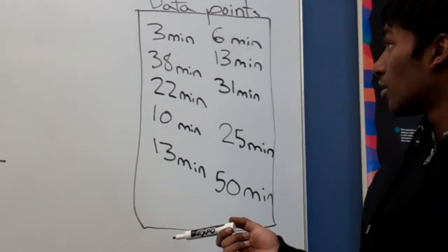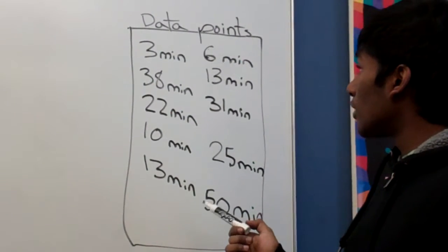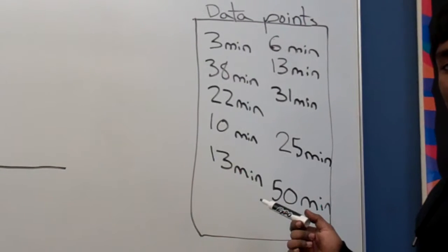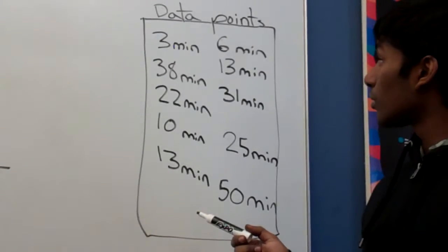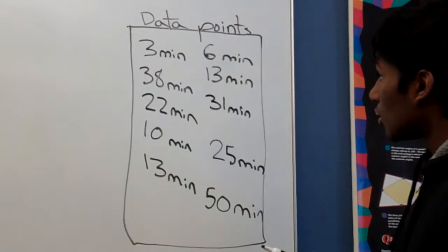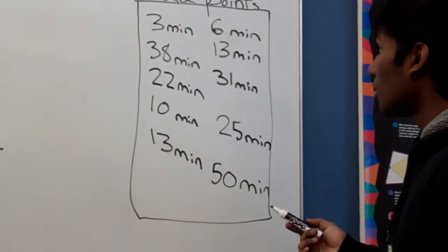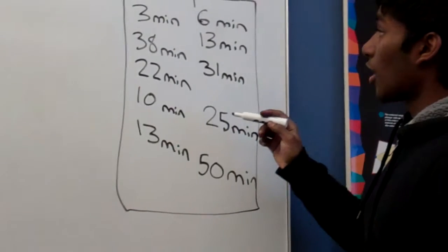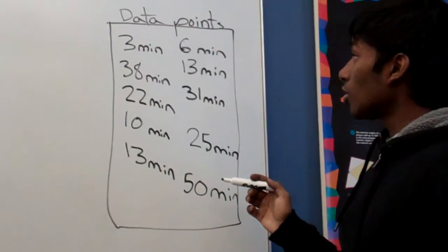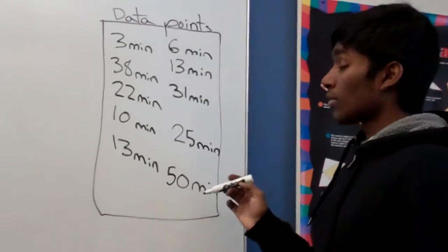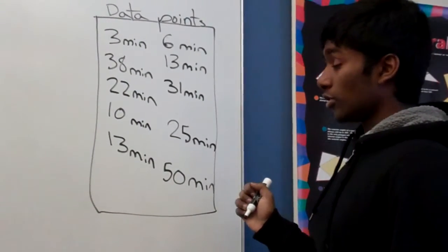But how do you graph it? What you have to do is take the data points close to each other and put them in the same interval. As you can see, there are ten data points and some of them are close together like three and six and six and ten. So what we're going to do is group them in intervals of nine.